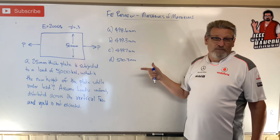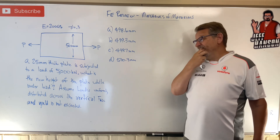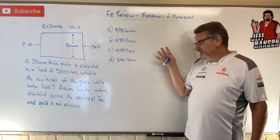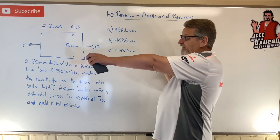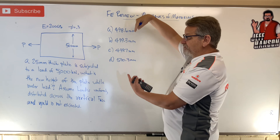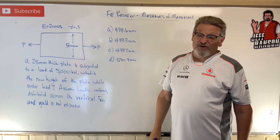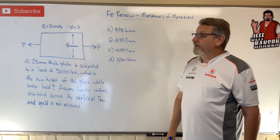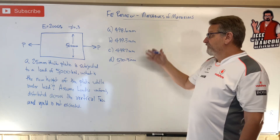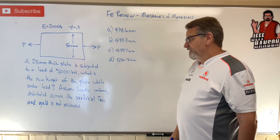Did you get an answer? Now, first thing — I know that if I pull on that thing, the cross-section is going to get smaller. So I know my answer is smaller than 500, which means that one's already out. I'm down to three answers. Let's see if we can work it out. What are we given here?